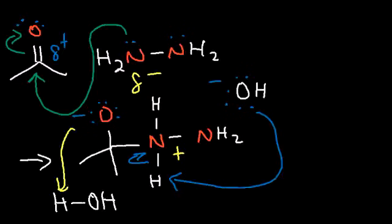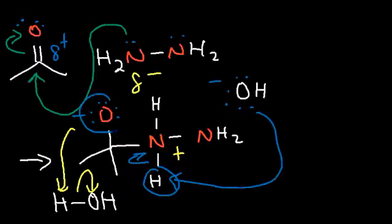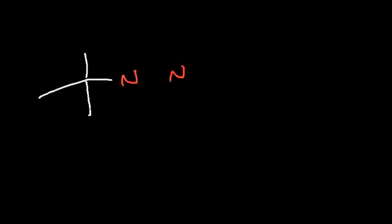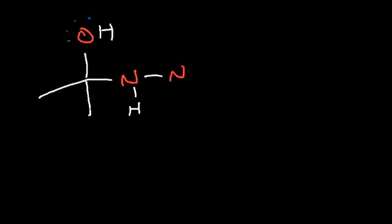Under basic conditions, hydroxide grabs the hydrogen and turns into water, which is an acid under basic conditions. This oxygen is going to grab a hydrogen from water, regenerating the hydroxide ion. Basically, we transferred a hydrogen from one part of the molecule to another by means of the solvent. Now the nitrogen is neutral, so everything in the intermediate is neutral.